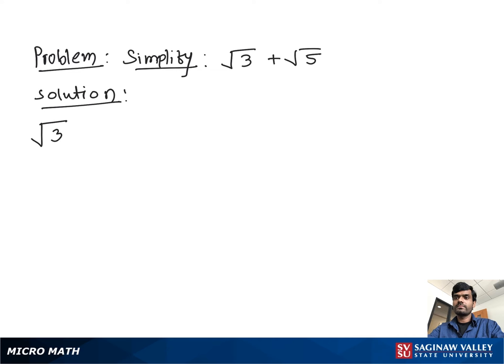Simplify square root of 3 plus square root of 5. To add radicals, we have to have the same radical sign and the same number under the radical signs. But here, one is square root of 3 and another is square root of 5. Both are under a square root, but both are different numbers — one is 3 and another is 5. So you cannot add them; the final answer is just square root of 3 plus square root of 5.